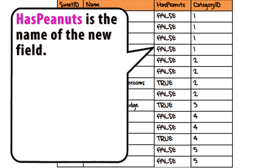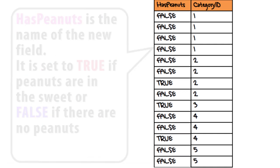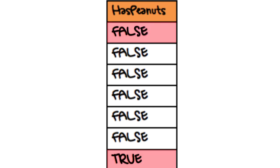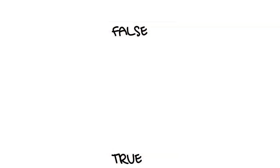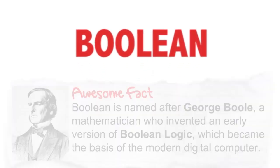This is a special type of field because it contains values which can only be true or false. There are only two possible values in this type of field. Fields that can only store true or false values are called Boolean fields, and they have a field type of Boolean.